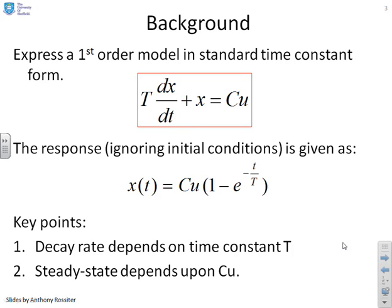Now before we start, just a reminder of some of the key things we've done on first order systems. Number one, we've said you can always represent a system in time constant form, where capital T is the time constant, and capital C is the steady state gain. And you'll remember that these parameters tell us very important things about the behaviour. The time constant, roughly how long does it take to settle, and the gain, obviously, where does it settle to.